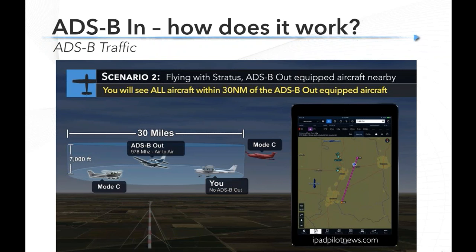Scenario two: still in the 172 without ADS-B out, still with a portable receiver, but now there is a ground station. The Baron is flying along, waking up the ground station, and getting his hockey puck of information. We're close to the Baron, so we can sniff his hockey puck — in addition to the Baron, we also see another Cessna, a Mode C target. That's great, but we still don't see that other airplane in red, and we don't know that we don't see him.